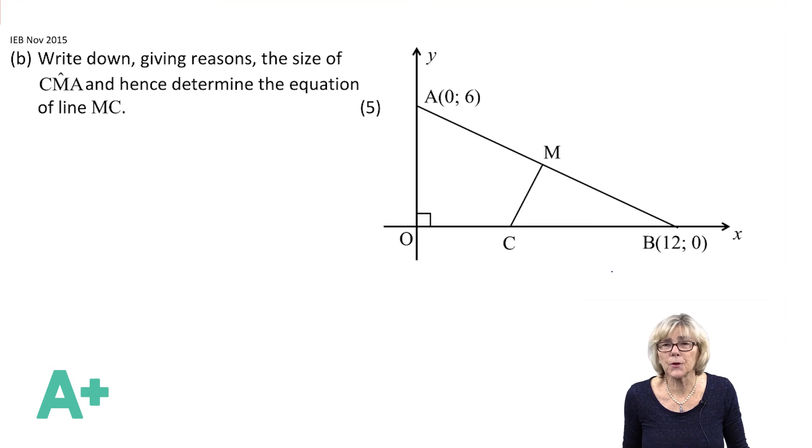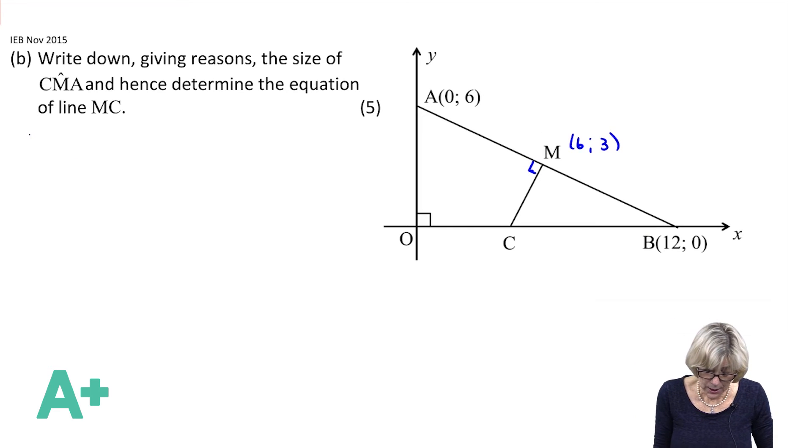The part b - we've got to remember what we did, so here we found this to be (6,3) and I've got that as 90. Write down, giving reasons, the size of CMA and hence determine the equation of MC. Well, we've got to give a reason, so CMA is equal to 90 degrees. Reason: opposite angles of cyclic quad.